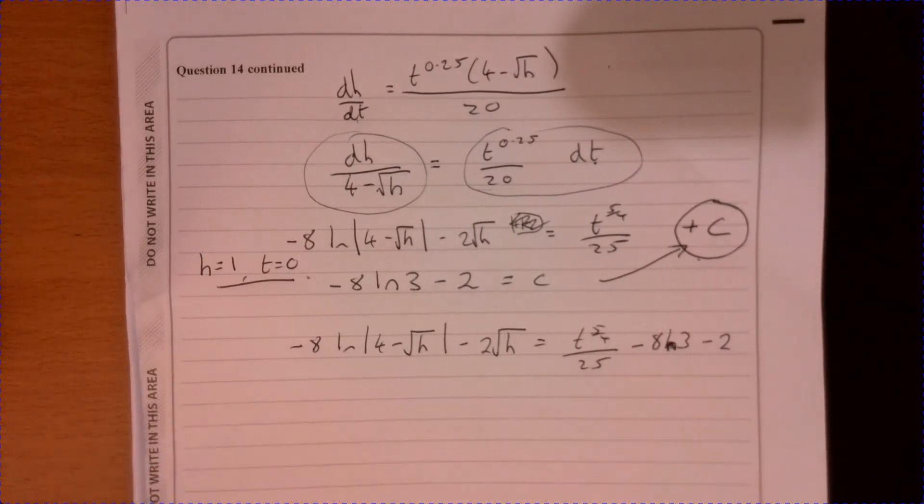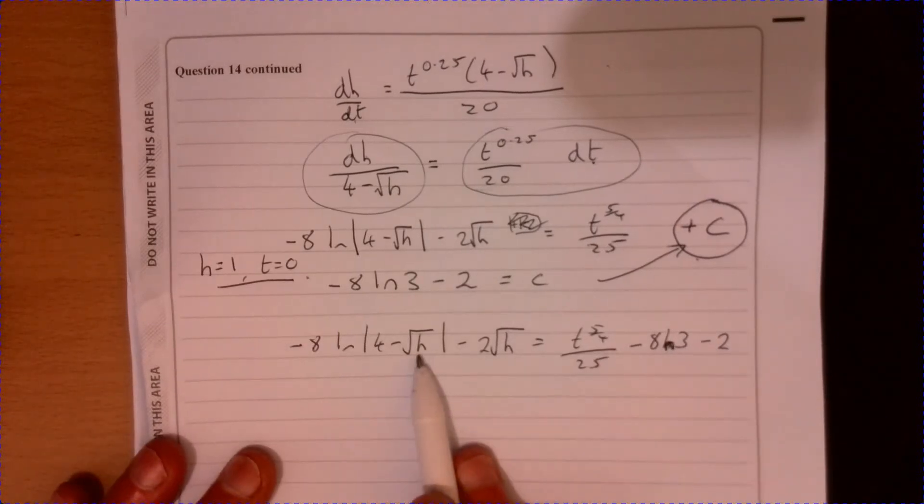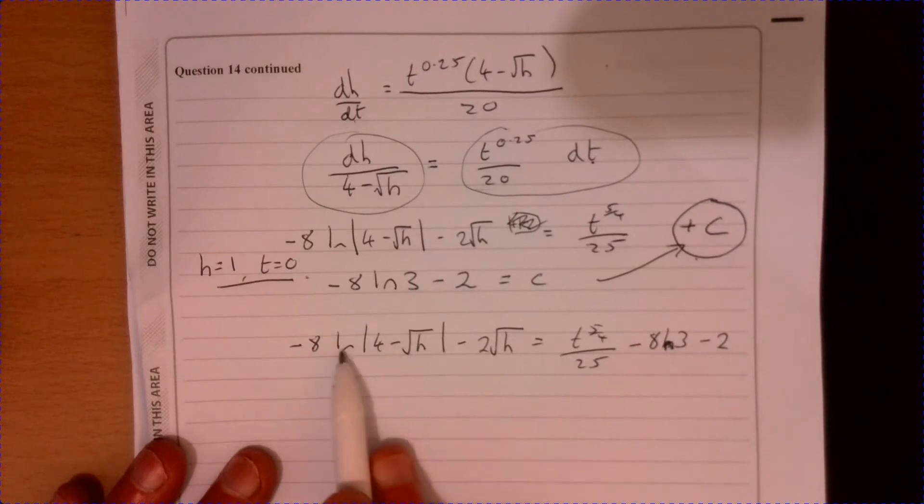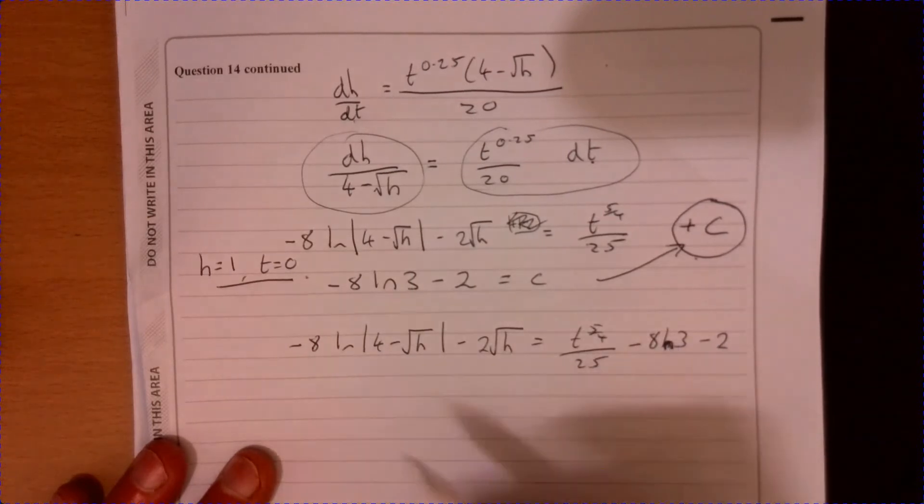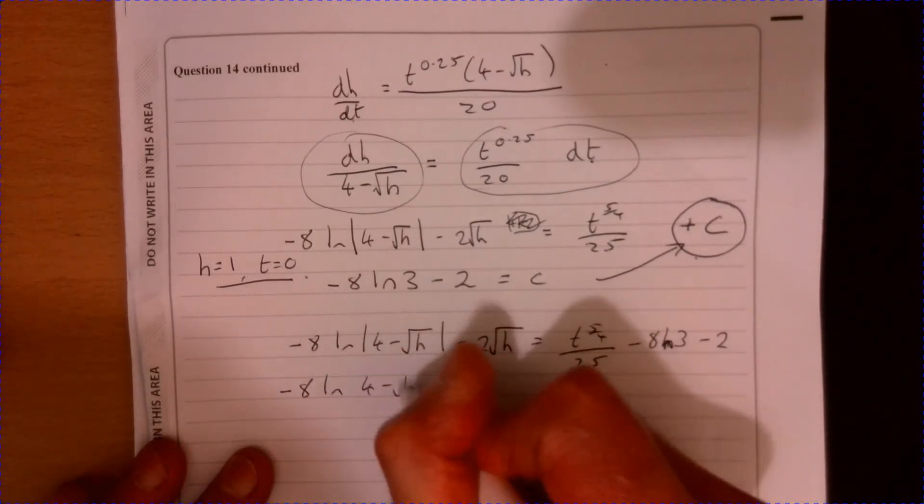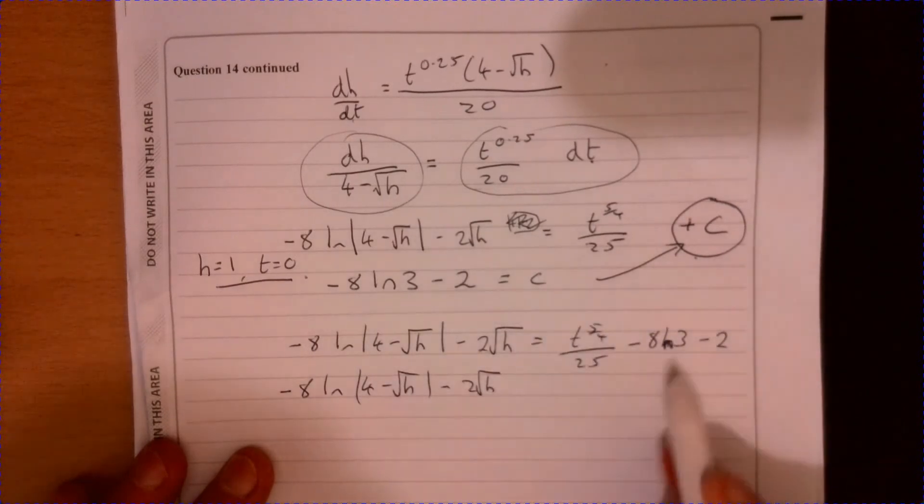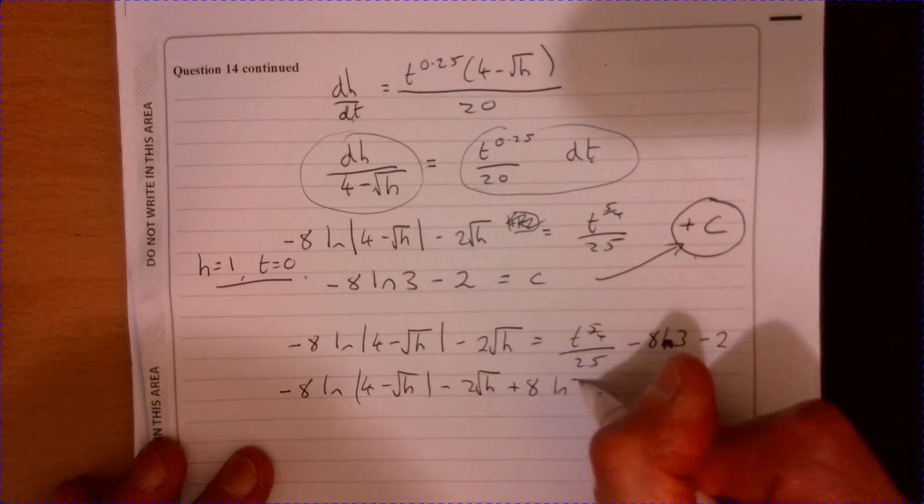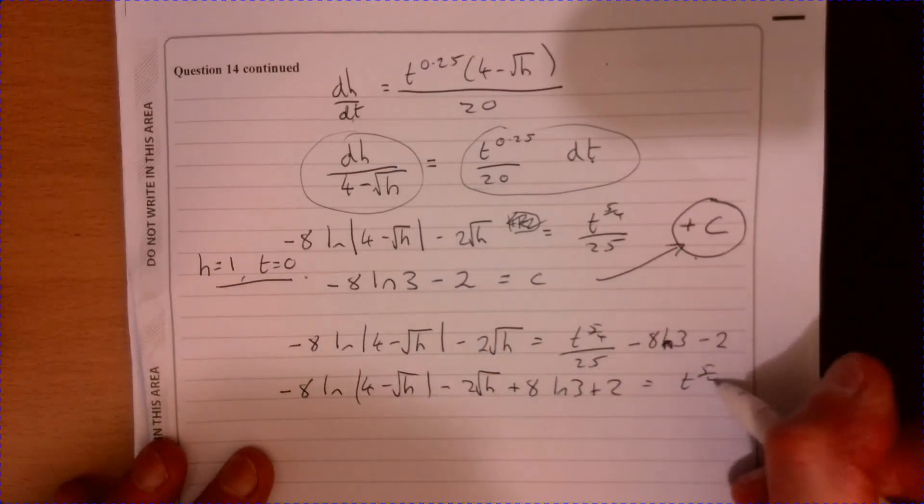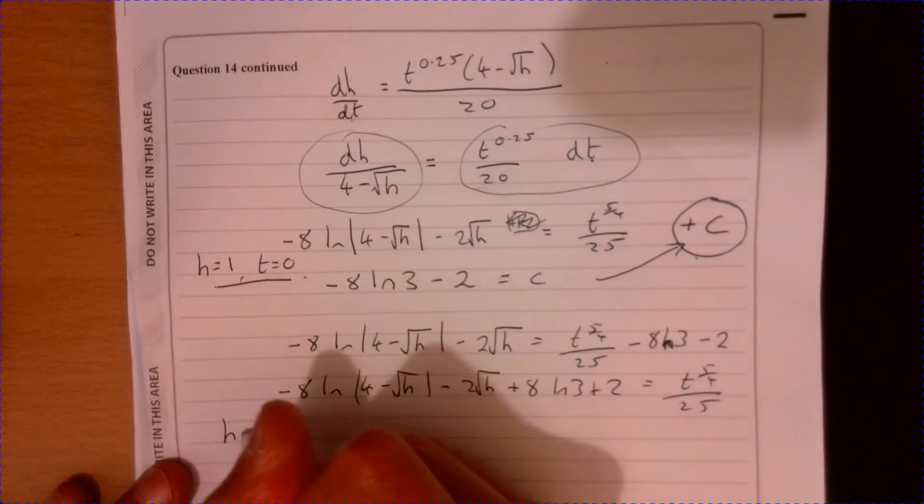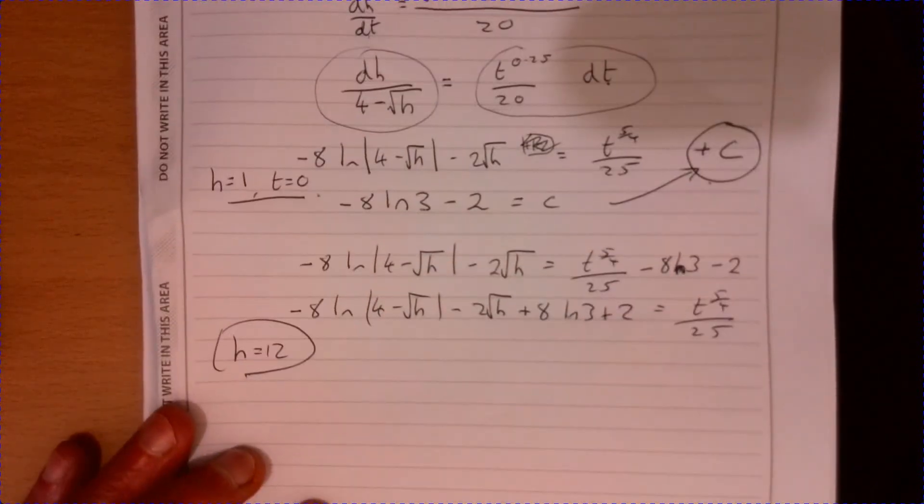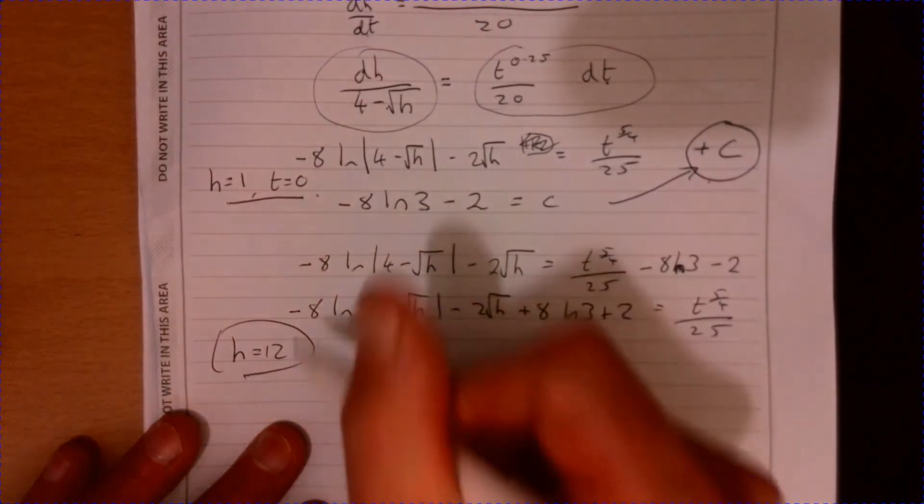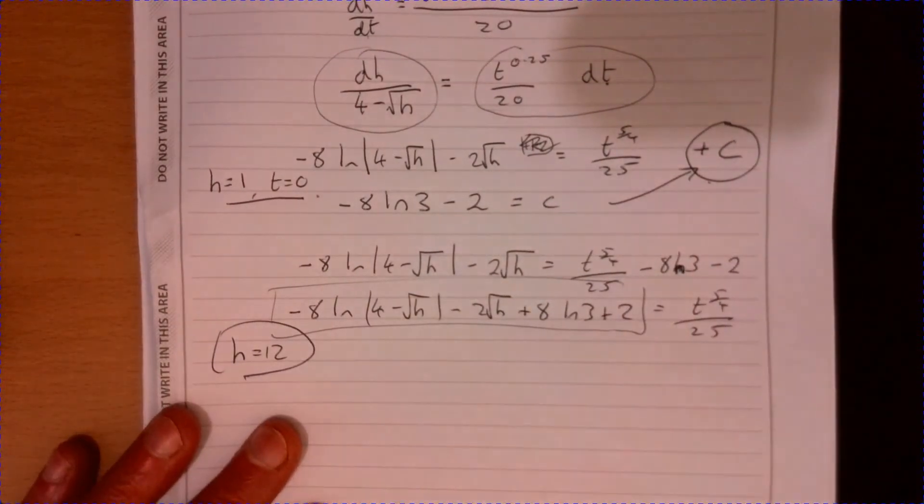Now the question at this stage said calculate the time this tree would take to reach a height of 12 metres. So the time it takes to reach a height of 12. So all that means that we need to do is we're just going to put in 12 into here. If we add these two as well, 4 minus root 12 and minus 8 ln. And then add these guys, 8 ln 3 plus 2 equals. So we're just going to put in a height equals 12. And if you plug that into here, use your calculator for that. That's a bit yucky.